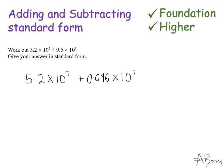So now I do my addition. So I've got 5.2. Add 0.096. And my answer is going to be times 10 to the 7. So 5.2 add 0.096 is 5.296 times 10 to the 7. That's adding standard form, done.